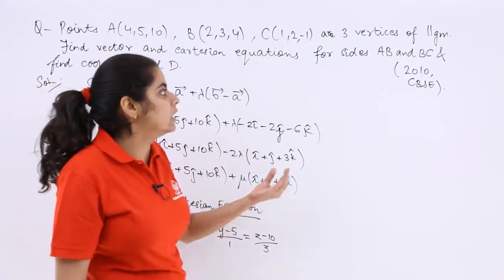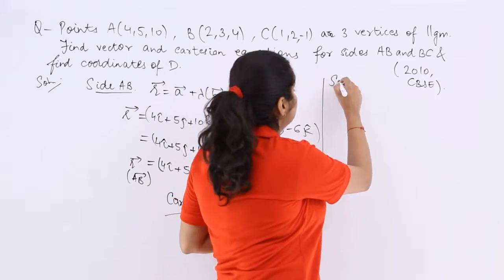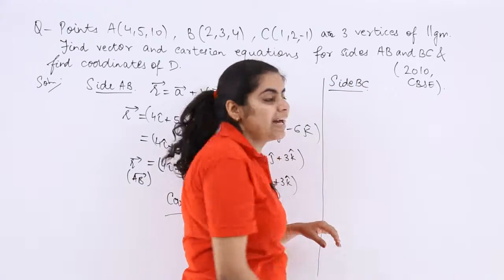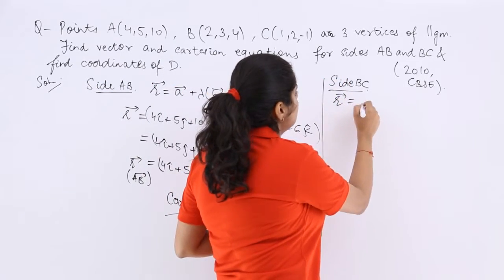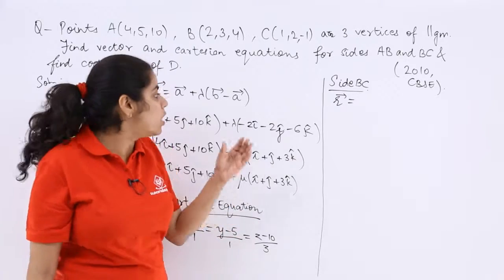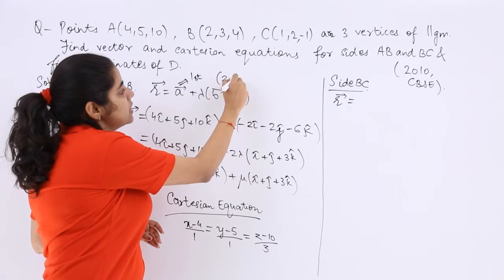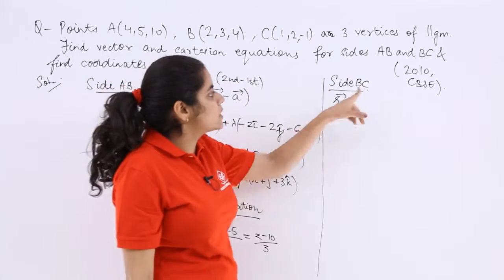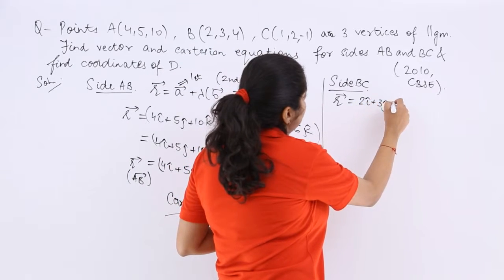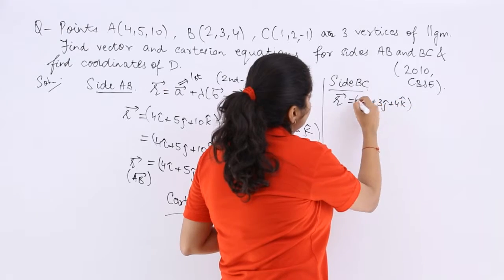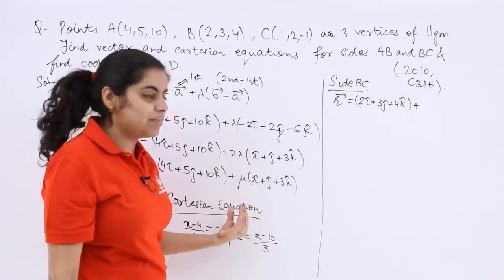Similarly, you can find that for the side BC. Let us make a line and I write side BC as the heading. Now the speed can be increased because now we know what we have to do. So R vector is equal to A plus lambda B minus A was the situation. Means the first plus lambda times second minus first.